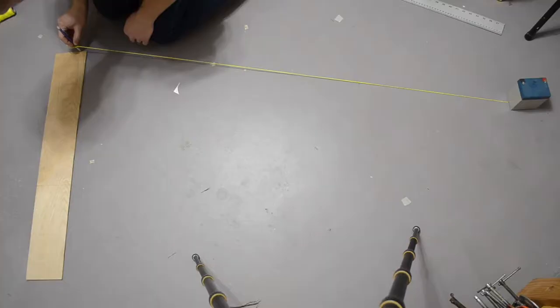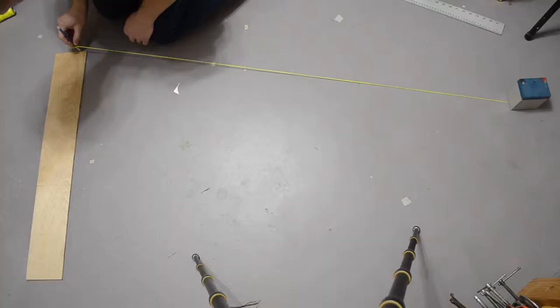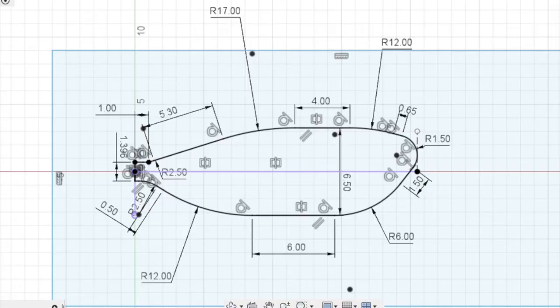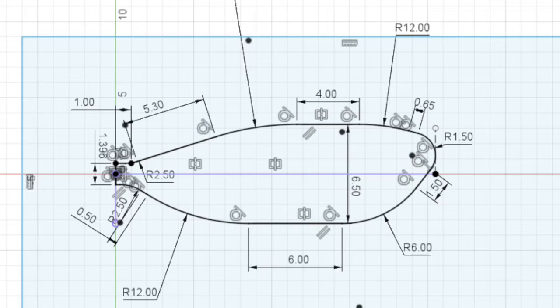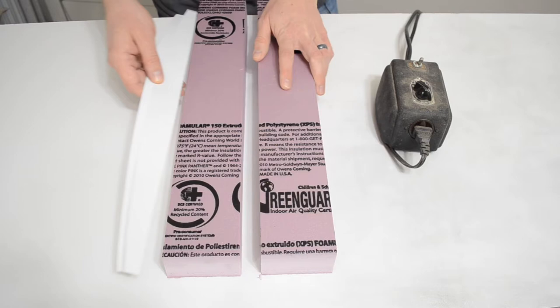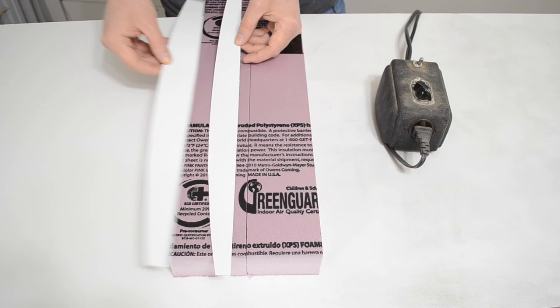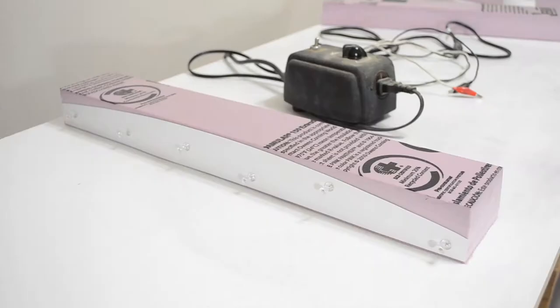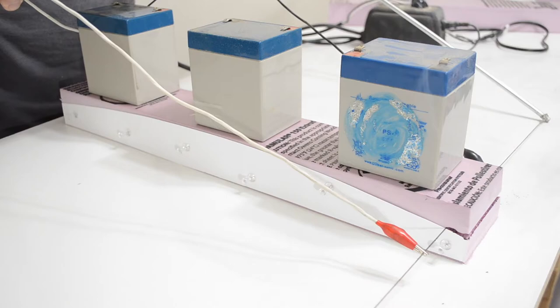The template for the center of the paddle needs to be shorter than the template on the outside of the paddle. That's what creates the dihedral. You can make those 60 inch radius templates by tying a 60 inch long string to a pencil, anchoring one end of the string, and using it to draw an arc on your template material. Or you can become a Patreon supporter and get access to all the digital files that I used for my build.